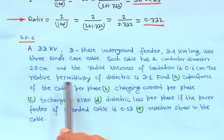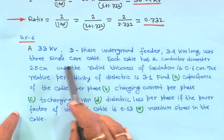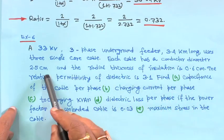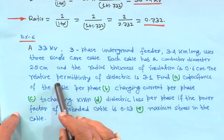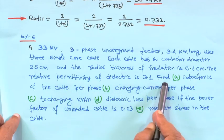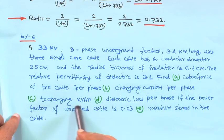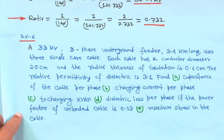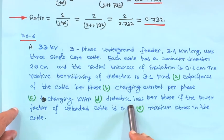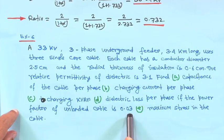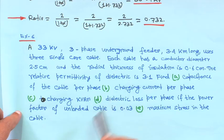Example 6: a 33 kV three-phase underground feeder, 3.4 km long, uses three single-core cables. Each cable has a conductor diameter of 2.5 cm and radial insulation thickness of 0.6 cm. Relative permittivity of dielectric is 3.1. Find: (A) capacitance per phase; (B) charging current per phase; (C) charging kVAR; (D) dielectric loss per phase if power factor of unloaded cable is 0.03; (E) maximum stress.